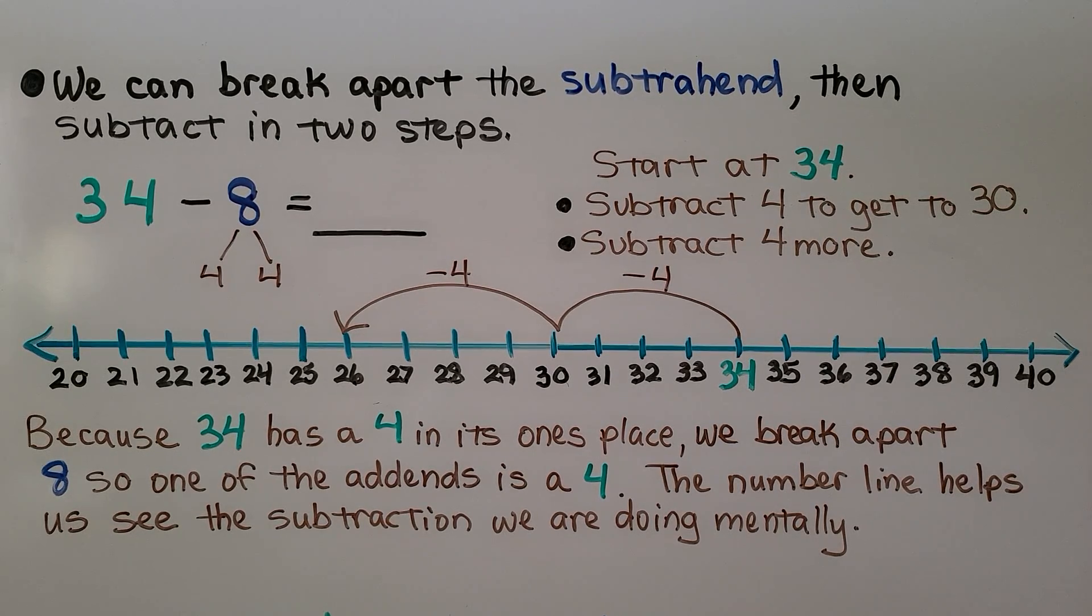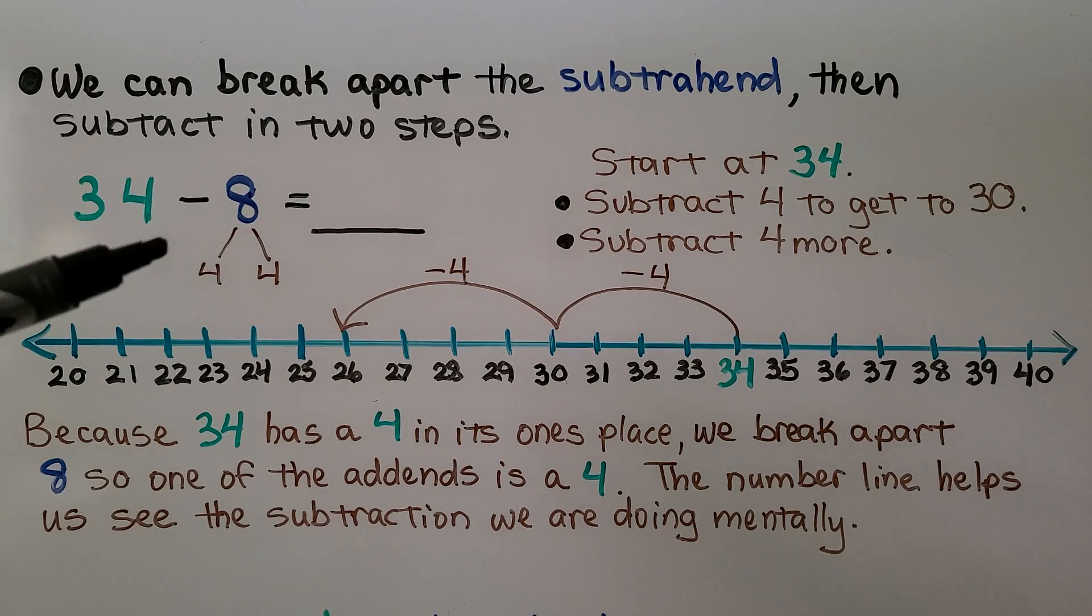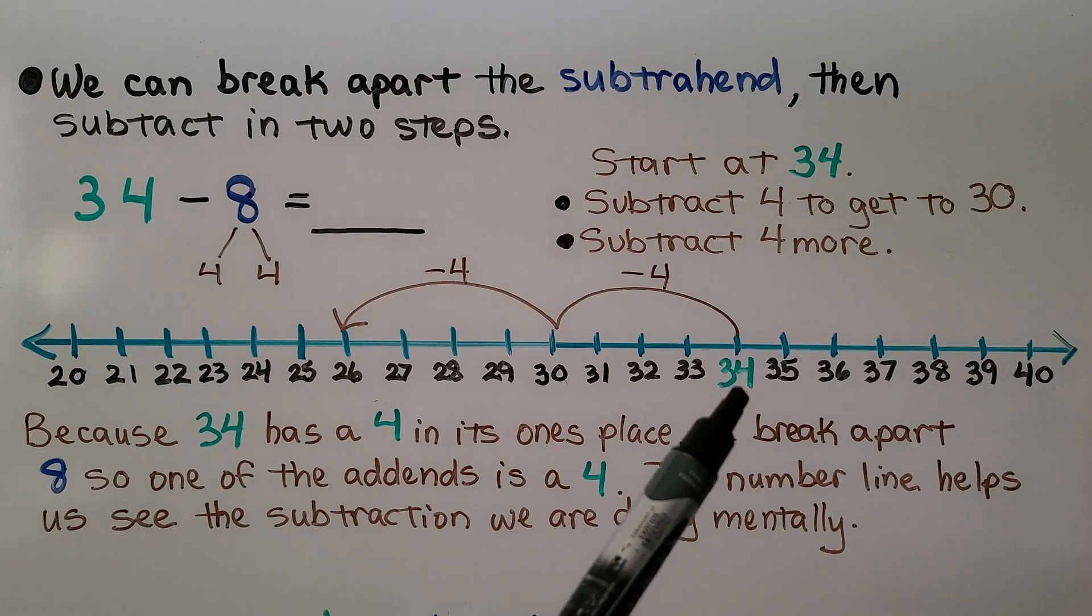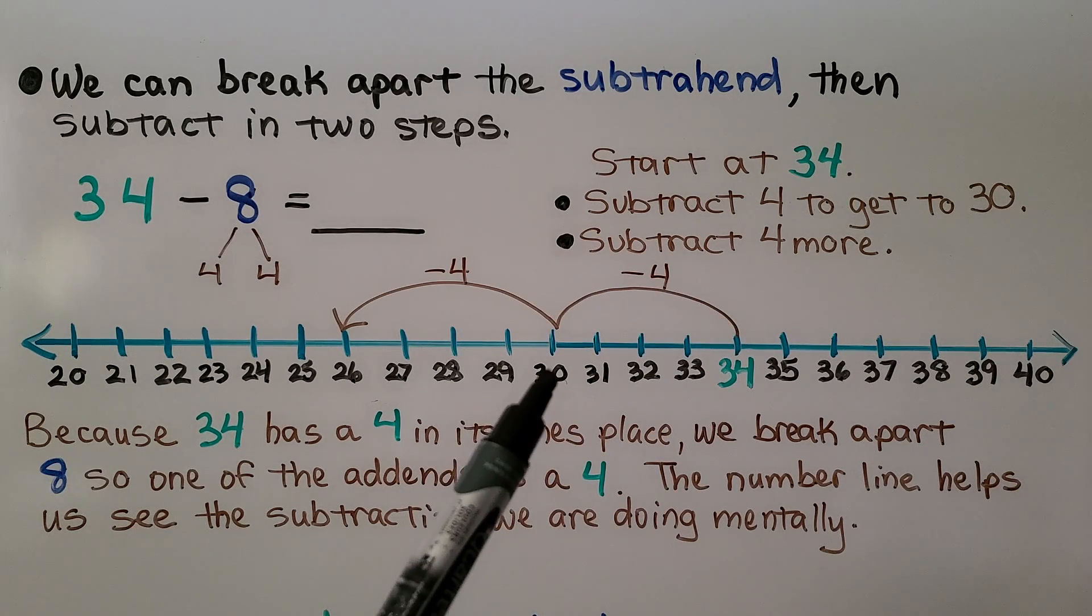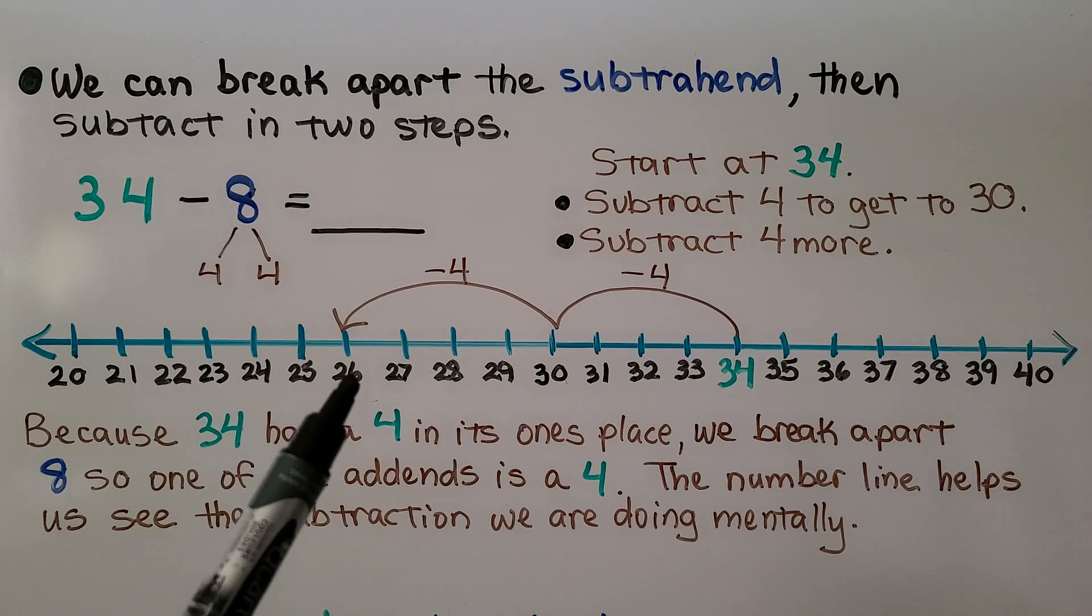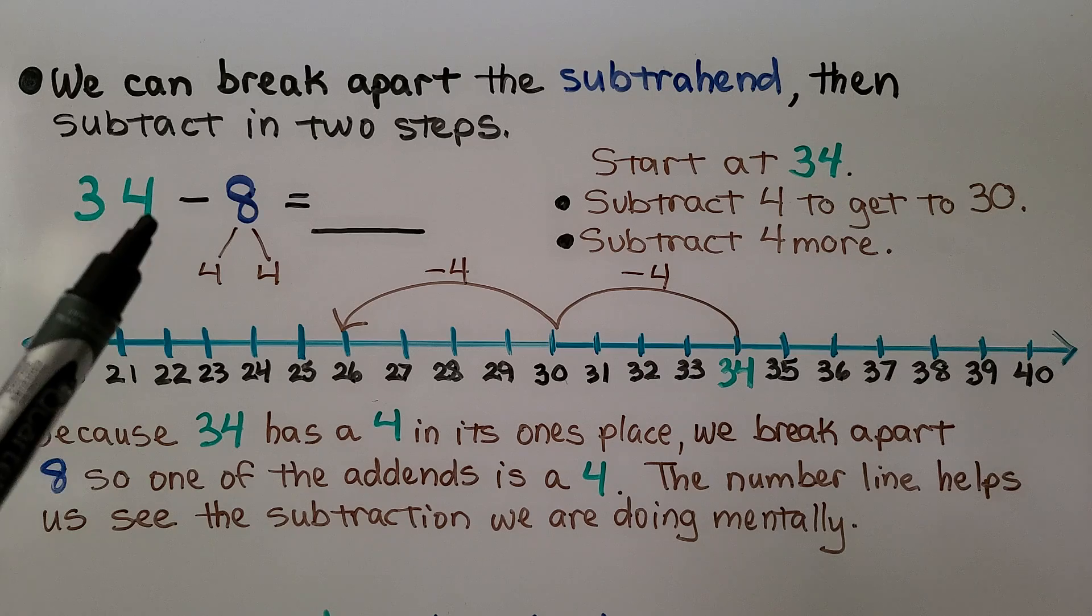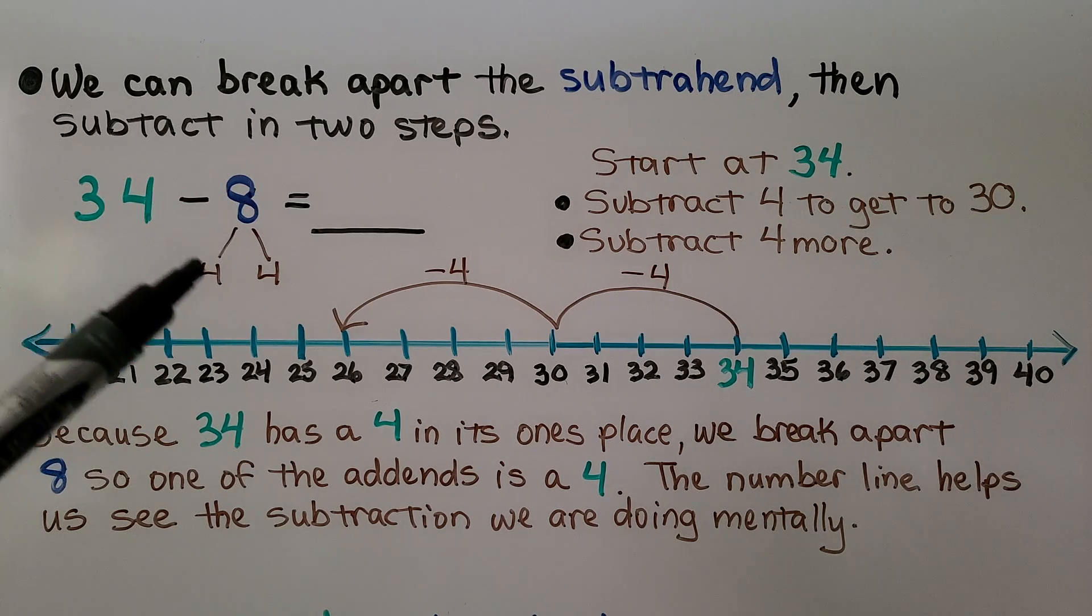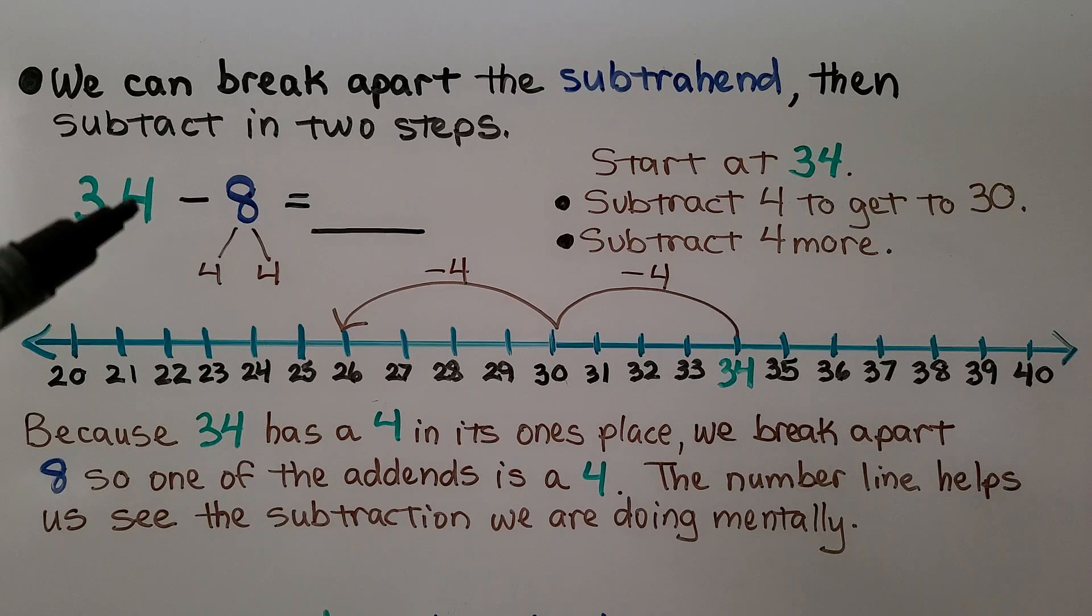We can break apart the subtrahend, then subtract in two steps. We have 34 minus 8. We start at 34 on this number line. We subtract 4 to get to the tens number 30. Then we subtract 4 more and we're at 26. Because there's a 4 in this ones place, we break apart the 8, so one of the addends is 4. The number line helps us see the subtraction we're doing mentally.